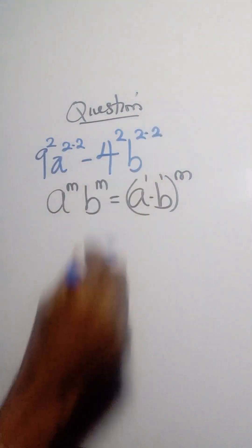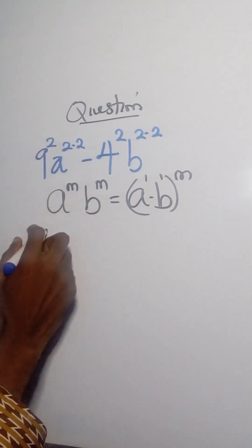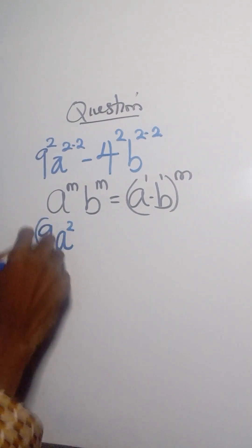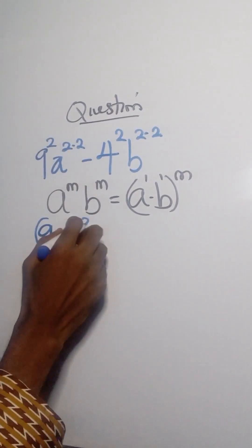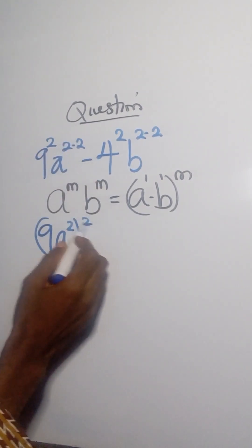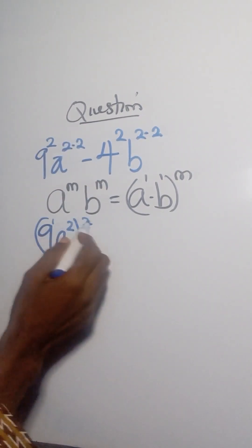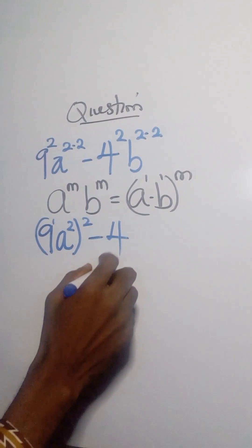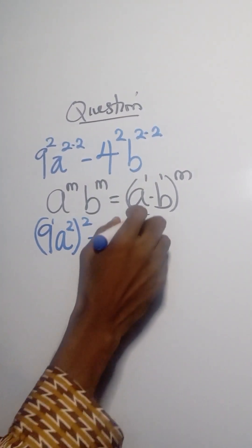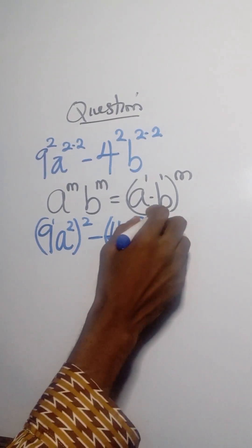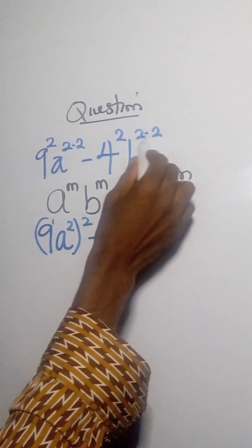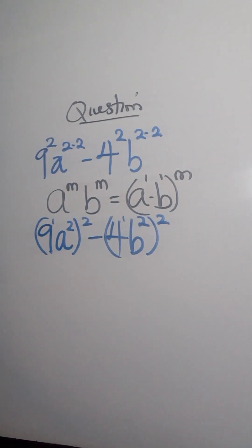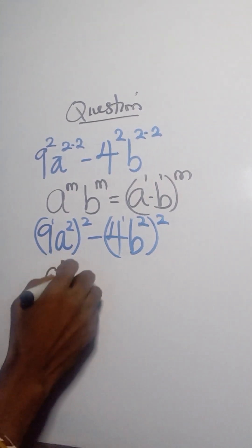Applying this law, this becomes 9a squared — factoring out the power of 2, so 2 times 1 here. We have minus 4b squared, factoring out one of the 2's. From this we can recognize another law: the difference of two squares.